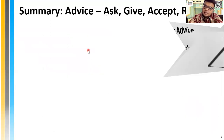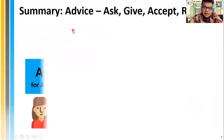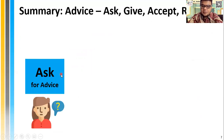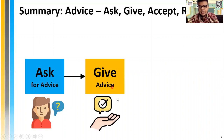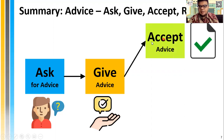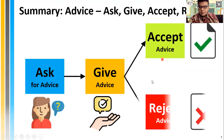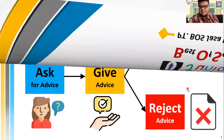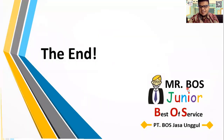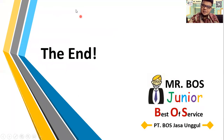So what have we learned today? Advice: step one is for someone to ask for advice, step two is for the other person to give the advice, and step three is either to accept or reject the advice. Thank you so much. That's the end of our lesson. Goodbye.